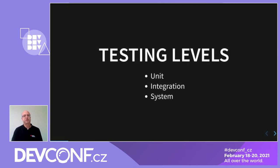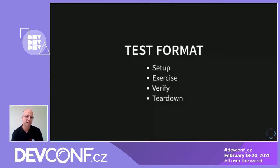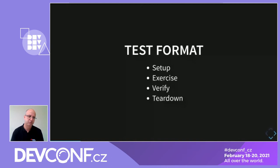Some test definitions. How does a test look when you write it? It has a setup. It has an exercise, which is the operation that you are trying to check. It has a verification of the outcome of that operation. And it has a teardown where you clean up or do other operations to continue on to the next test. The setup and teardown have another name, which is a fixture. The exercise and verification together form the test body.